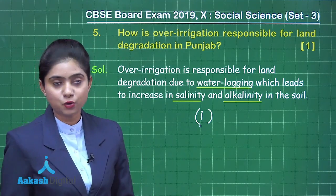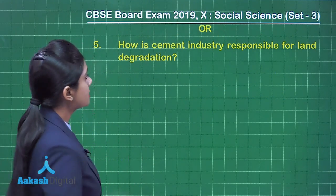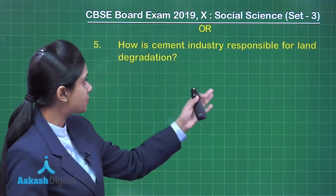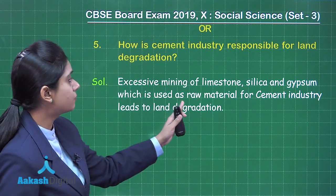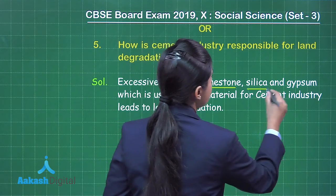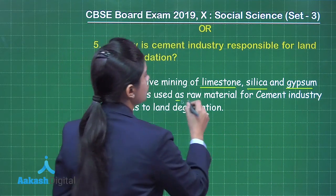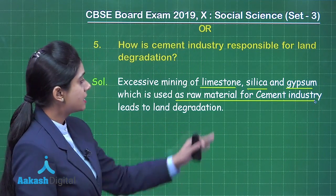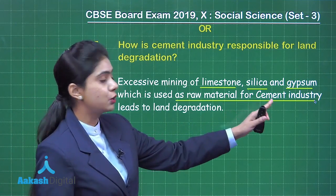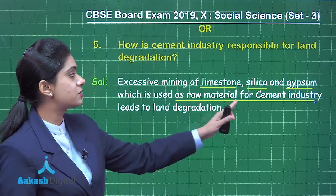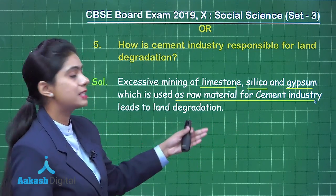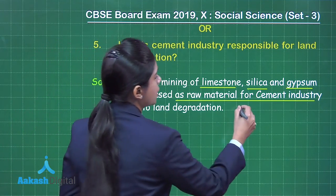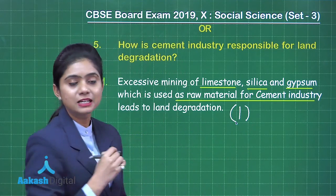The choice for Q5: How is the cement industry responsible for land degradation? Excessive mining of limestone, silica, and gypsum — which are used as raw materials for the cement industry — leads to land degradation. These materials are very important raw materials for cement, but their mining is leading to land degradation. This answer will help you get one mark.